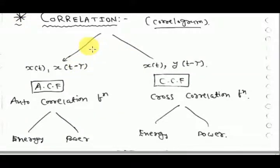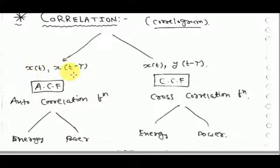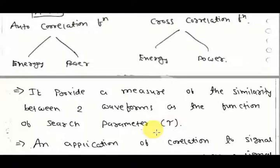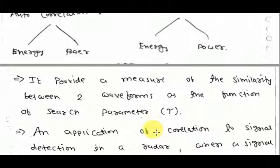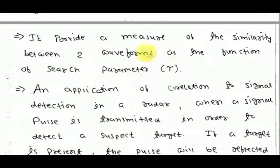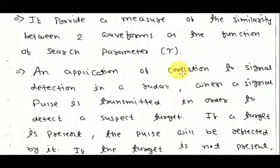Correlation is basically of two types: autocorrelation function and cross-correlation function. Autocorrelation function is when we compare the similarity between the same signal but delayed by tau amount. When we measure this similarity between these two waveforms, it is called the autocorrelation function. Cross-correlation function measures similarity between two different waveforms. Both are of energy or power type depending on the signal. Correlation provides a measure of similarity between two waveforms as a function of the search parameter tau, which is also called the lag parameter.